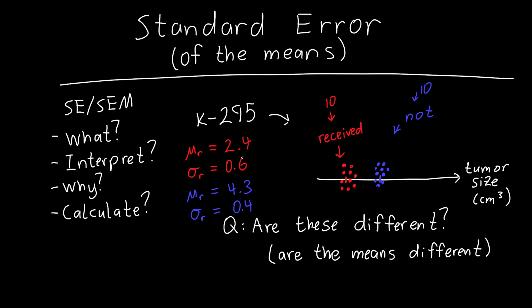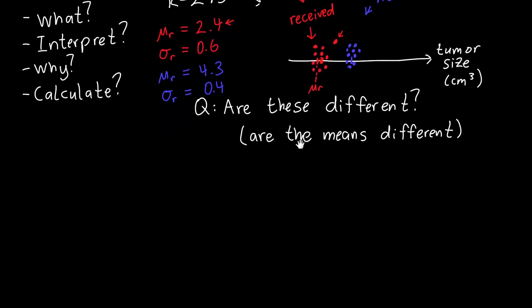Now, this is our mean and standard deviation, but we don't have a whole lot of data points. Suppose I gave one more person the drug, and that person happened to be out here. Then our mean, which right now is right here, would shift a little bit to the right, so it would get closer to the group that didn't receive the drug. We're not so certain about where exactly the true mean is. We've said it's 2.4 for this group of 10 people, but it might be 2.6 or 2.2. How exactly do we know where that mean is? This is where the standard error comes in.